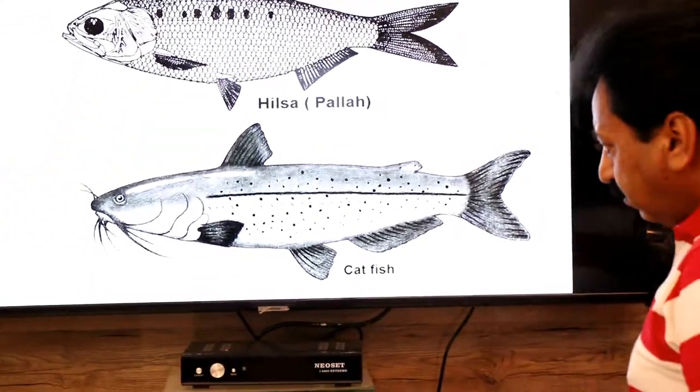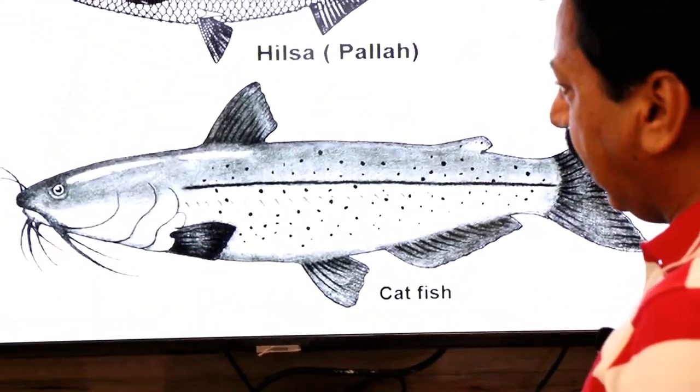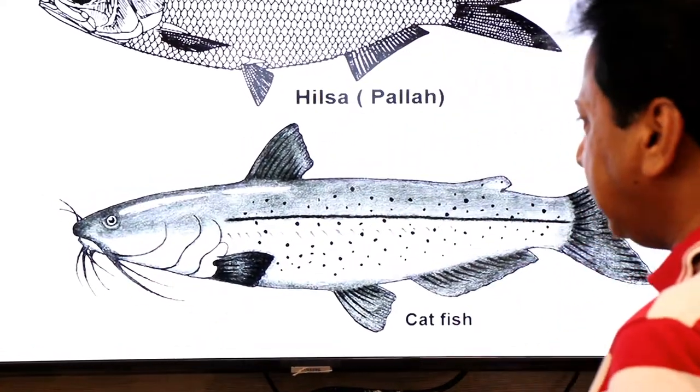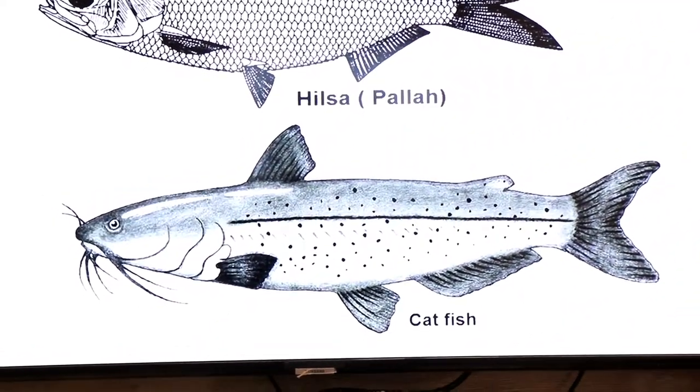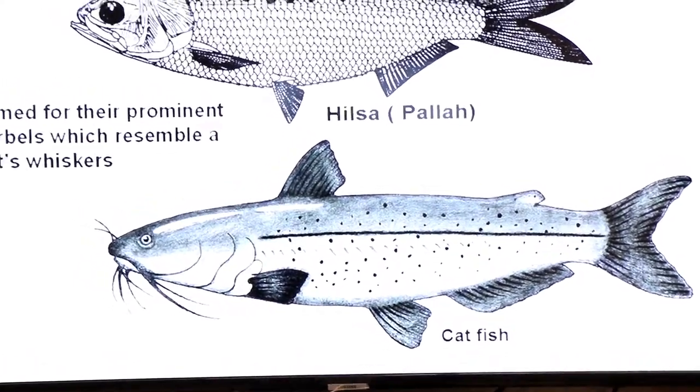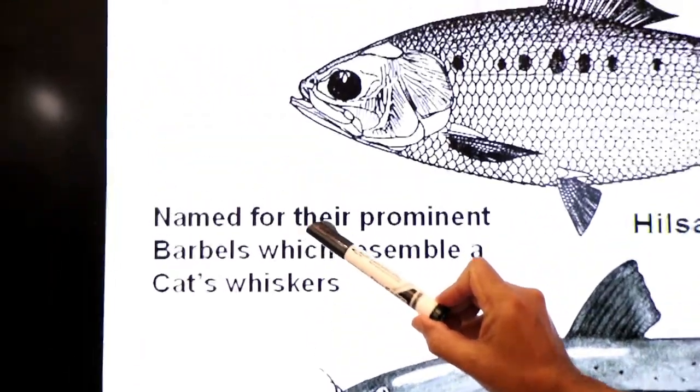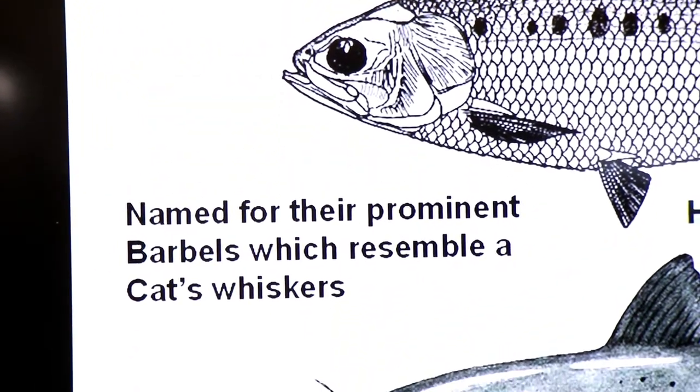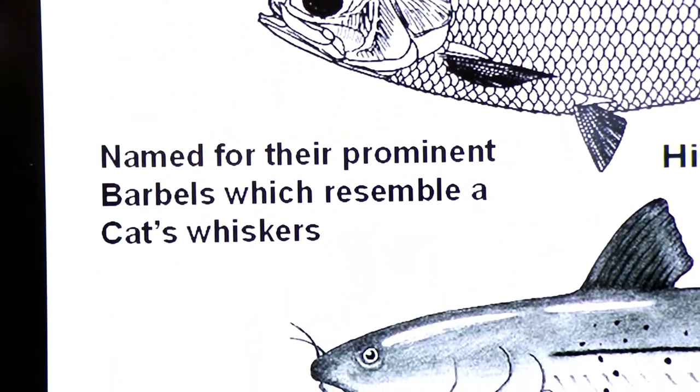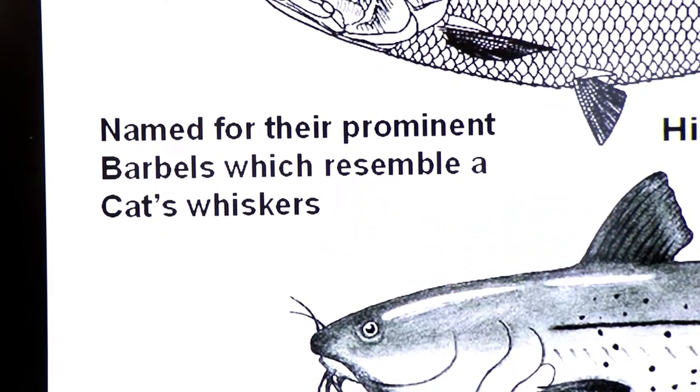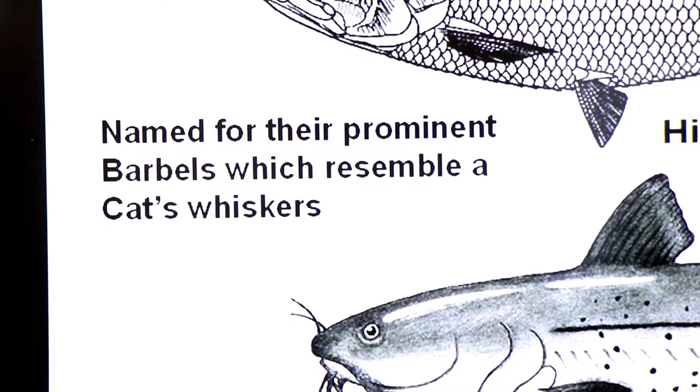Why this bony fish is called catfish? Look at here. These are the sensory organs of this fish known as barbels. So this fish is known as catfish, named for their prominent barbels which resemble a cat's whiskers. Dear students, whiskers are a type of mammalian hairs.